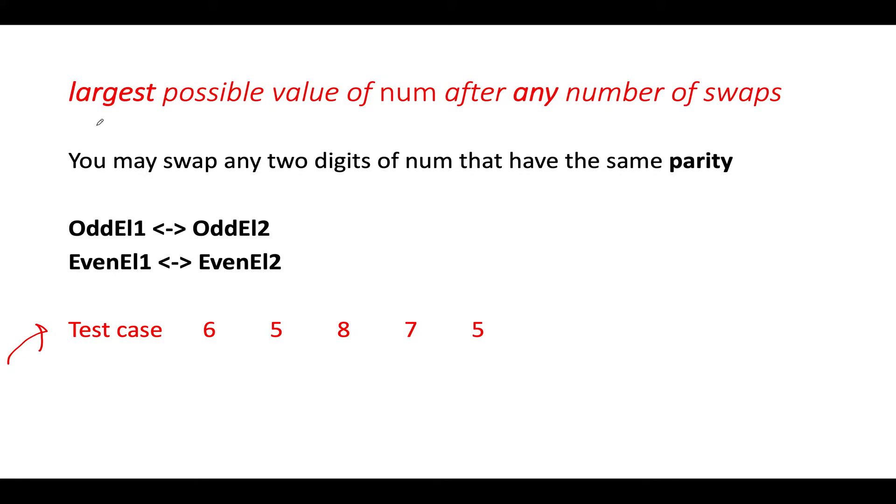Now let's get started with walking through one of the test cases and understanding the algorithm. We need to identify the largest possible value of nums that can be generated after performing any number of swaps. What are the rules for swapping? Two digits of nums should have same parity. When I say same parity, odd can be swapped by another odd number and even number can be swapped by another even number.